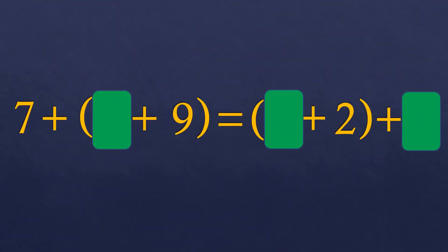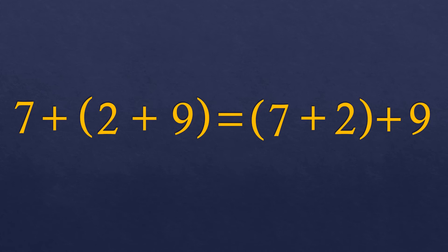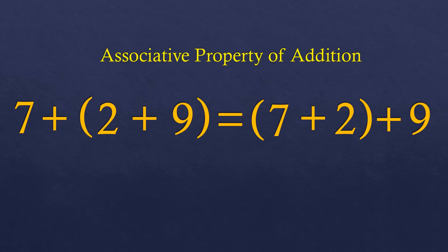Now another one. We have (7 plus blank) plus 9 equals blank plus (2 plus blank). There is a 2 on the right side, so the missing number in the first group on the left must be 2. And there are 7 and 9 on the left, so the two missing numbers on the right must be 7 and 9. This shows the grouping symbol moving, which is the associative property of addition.